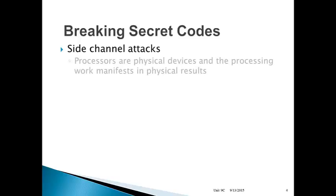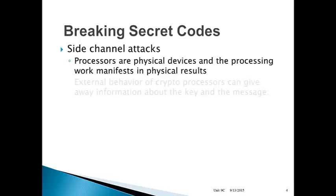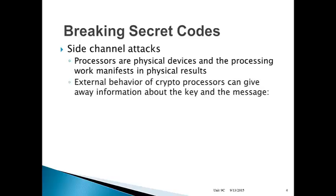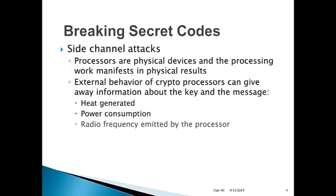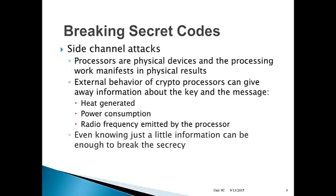Side channel attacks. Processors and cryptographic devices are physical devices, and the processing work manifests in physical results. You're dealing with real silicon that uses electricity, that generates heat, that executes certain sorts of behavior that you can measure. The external behavior of cryptoprocessors can give away information about the key and the message. For example, the amount of heat generation may tell you something about the complexity of the cryptography — more processing equals more heat. The power consumption likewise. And processors often emit radio frequencies because they operate in the megahertz and gigahertz ranges — they're a very fast electronic switch, and that generates emissions that radiate out and can be intercepted. Even knowing just a little bit of information from this can be enough to break the secrecy of the code itself.